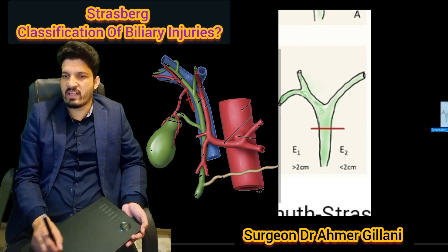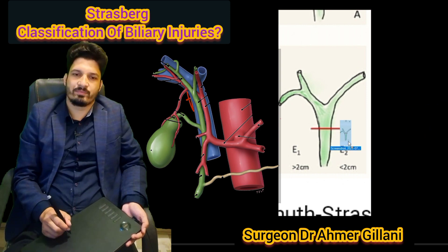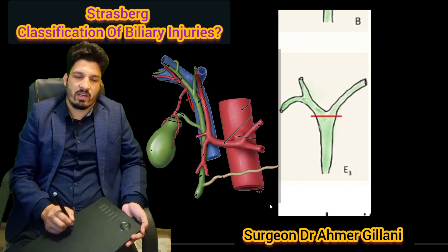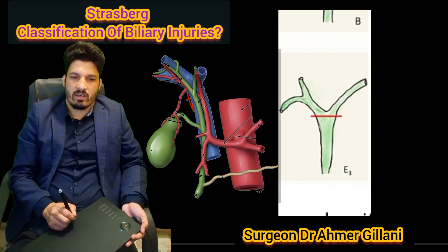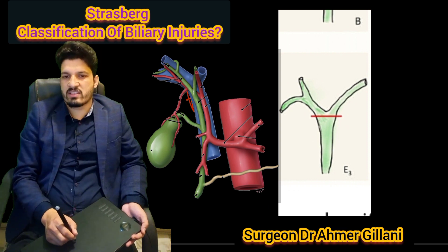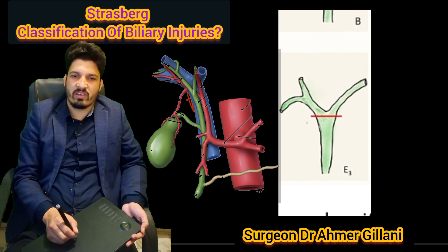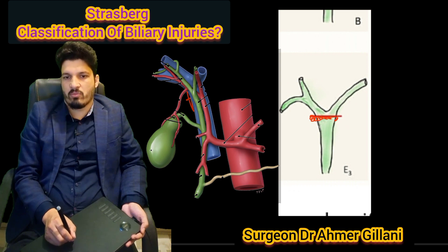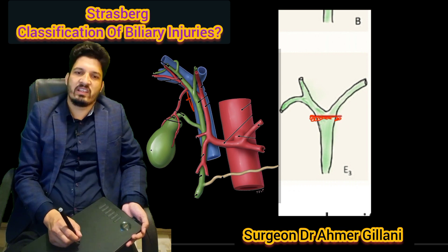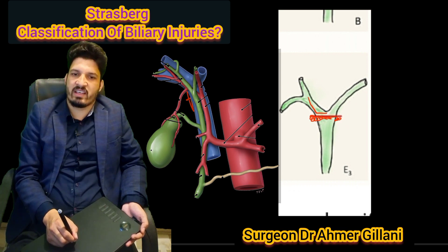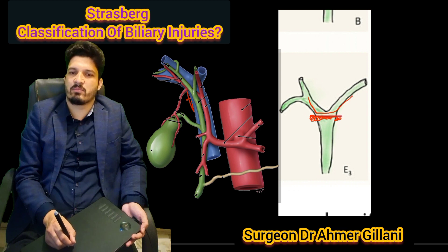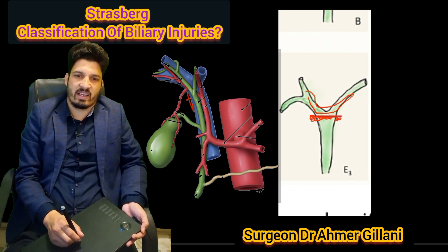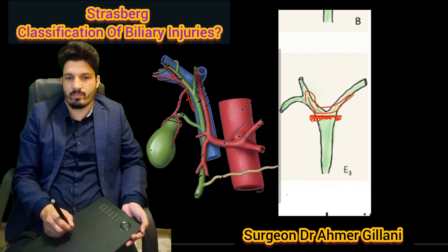After that, E3 — this is the injury which is involving the confluence, but the integrity between the right and the left hepatic ducts is maintained at this point.